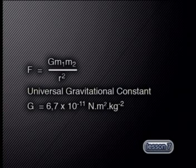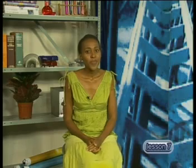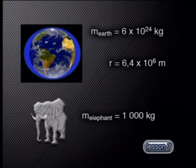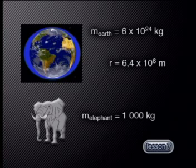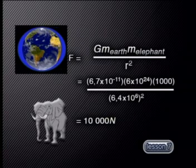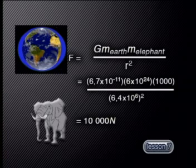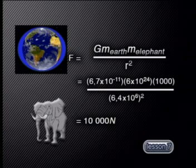Its magnitude is 6.7 times 10 to the power of negative 11 newton meters squared per kilogram squared. We can use this formula to calculate the force of attraction between the Earth and, say, an elephant. The Earth has a mass of 6 times 10 to the power of 24 kilograms. The elephant has a mass of 1,000 kilograms. Their centers of mass are separated by one Earth's radius, which is 6.4 times 10 to the power of 6 meters. The force of the Earth on the elephant is given by 6.7 times 10 to the power of negative 11 times the mass of the Earth times the mass of the elephant, all over the radius of the Earth squared.